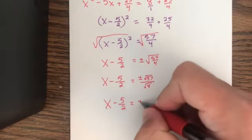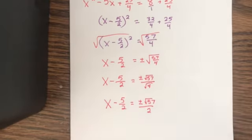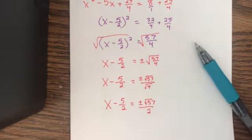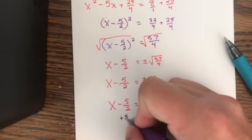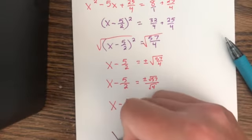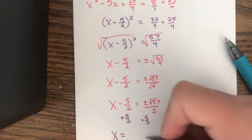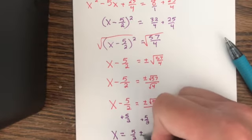We need to get x by itself. We will simply add 5/2 to both sides, and we'll get x equals 5/2 plus or minus √57/2.